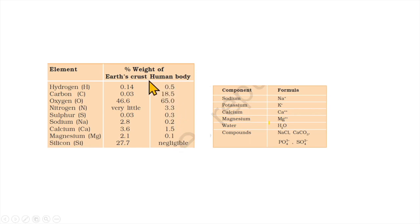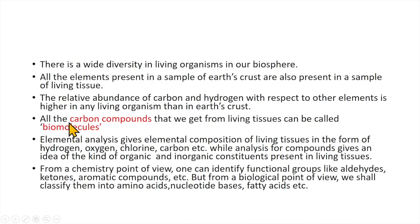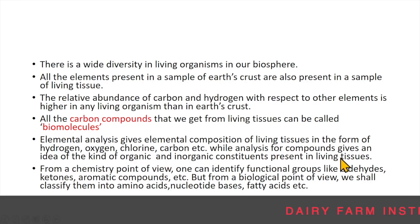When comparing carbon-hydrogen-oxygen concentration, the amount in the human body is higher — that is the basic difference between living beings and the earth crust. The nature of elements is the same; it is the relative abundance of carbon, hydrogen, and oxygen which differs. All the carbon compounds that we get from living tissues can be called biomolecules — that is where the name biomolecules comes from. We can perform two kinds of analysis: elemental analysis and compound analysis. Elemental analysis gives the elemental composition of living tissue in the form of hydrogen, oxygen, chlorine, carbon, etc.